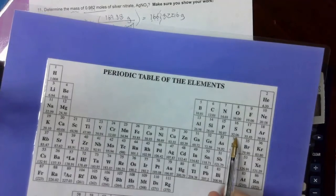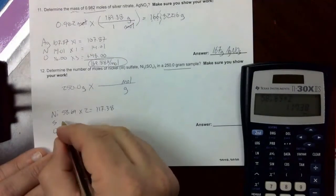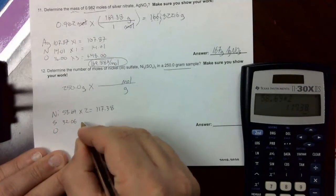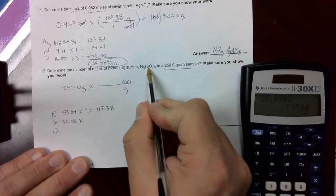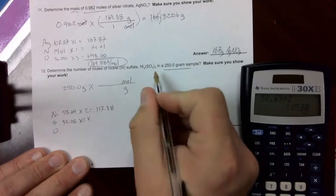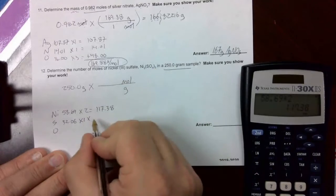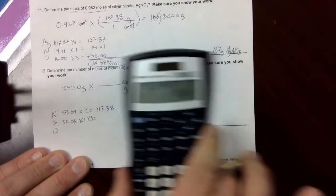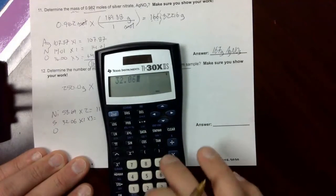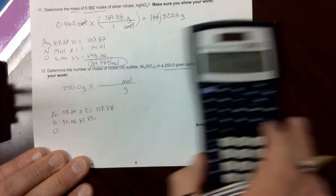Sulfur's mass on the periodic table, way over here, 32.06. Times the subscript on sulfur, 1. Times the subscript outside the parentheses, 3. We get 96.18.